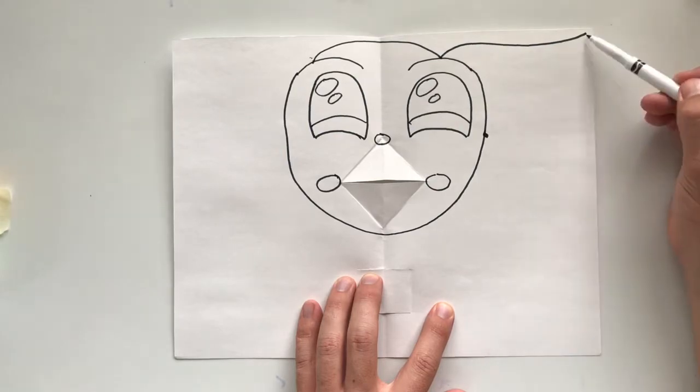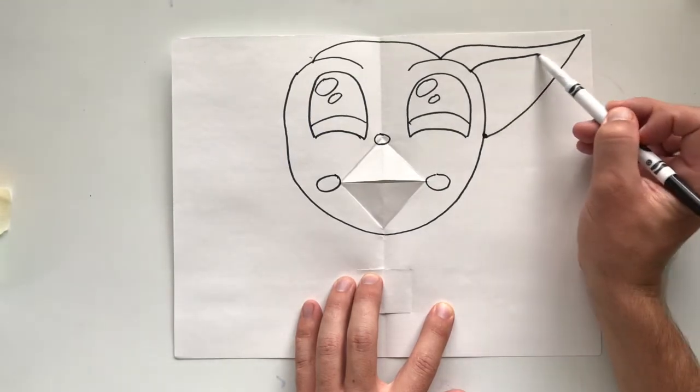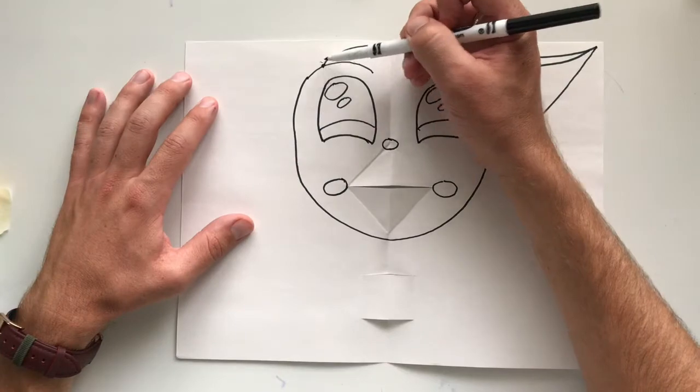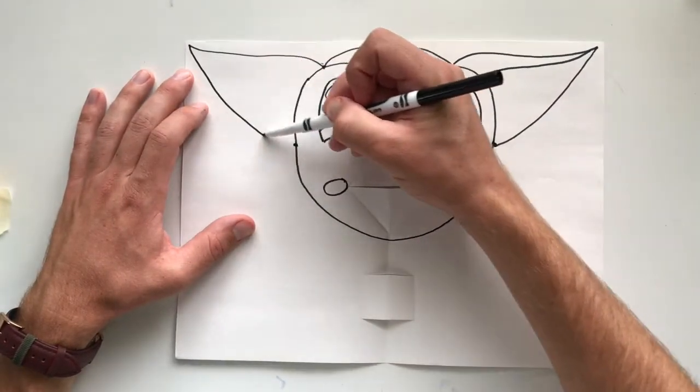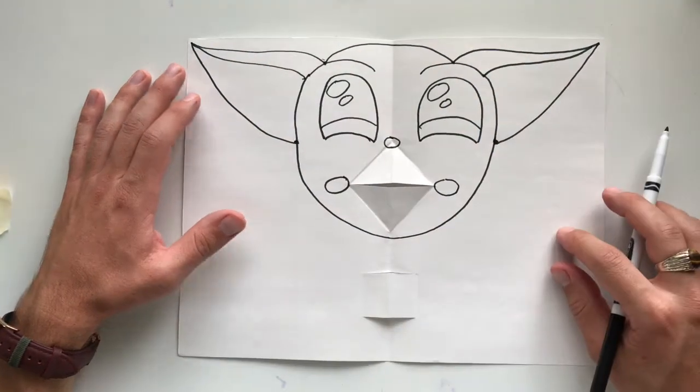His ears start right at the eyebrow. These two lines are going to point up towards the top right corner. Do it to the other side. We're going to try to make this as symmetrical as possible, the same on both sides.